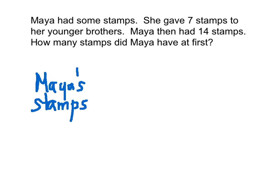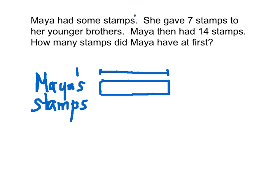Maya's Stamps. We're going to draw a bar for Maya's Stamps. It says Maya had some stamps — whenever you see a period or a comma, stop. We drew a bar for Maya's Stamps right here, but we don't know how many she had, so we're going to label that with a question mark. Always draw a length bar to show how far it goes, and put a question mark because we don't know how long from here to here actually is.